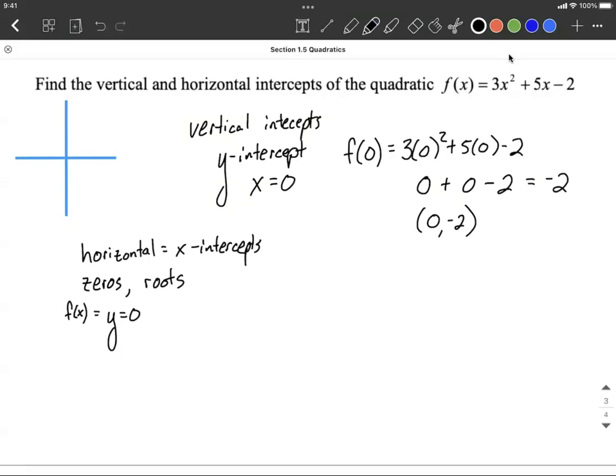So in our case, what we want to do is replace 0 in on the left-hand side where f(x) is, and we get this quadratic equation.